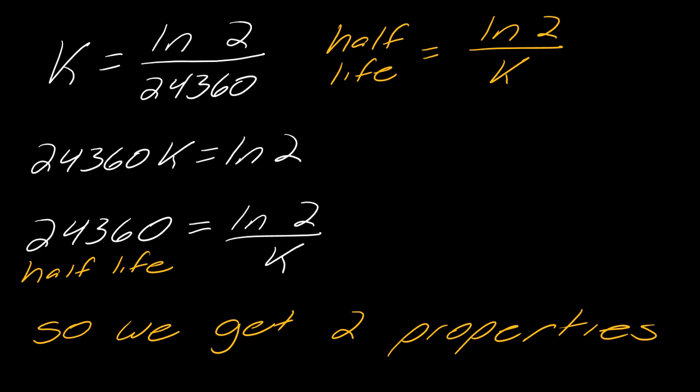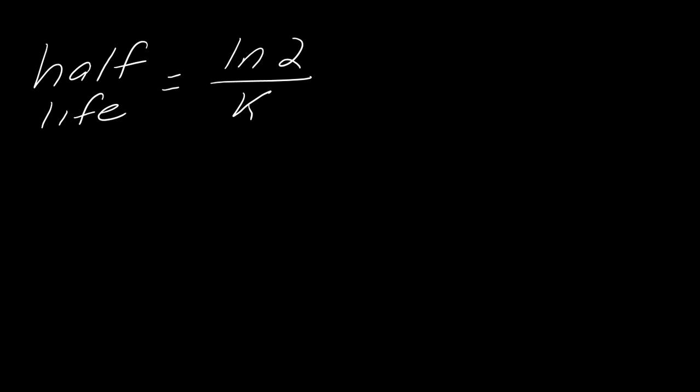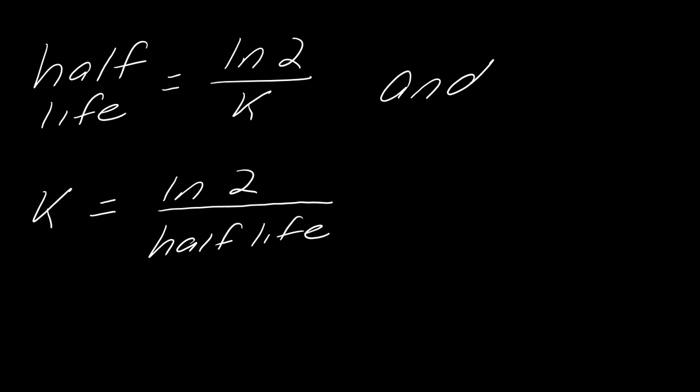So now they're one and the same. You get two useful properties: half-life equals natural log of 2 over K, and K equals natural log of 2 divided by half-life. So you can actually save some time if you remember this. I will tell you, I have the memory of a hamster, so I probably would not be able to remember this — I would just go through the differential equation. So if you do or don't remember this, that's totally fine. You can always just go through the differential equation and properties of logarithms and all that stuff.